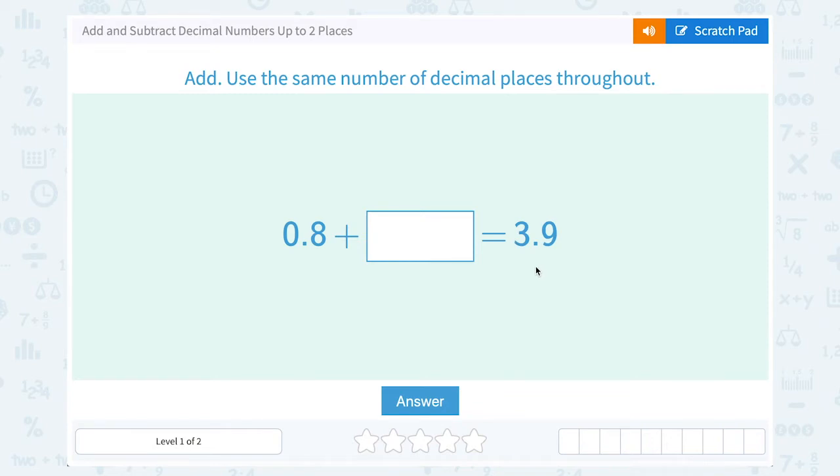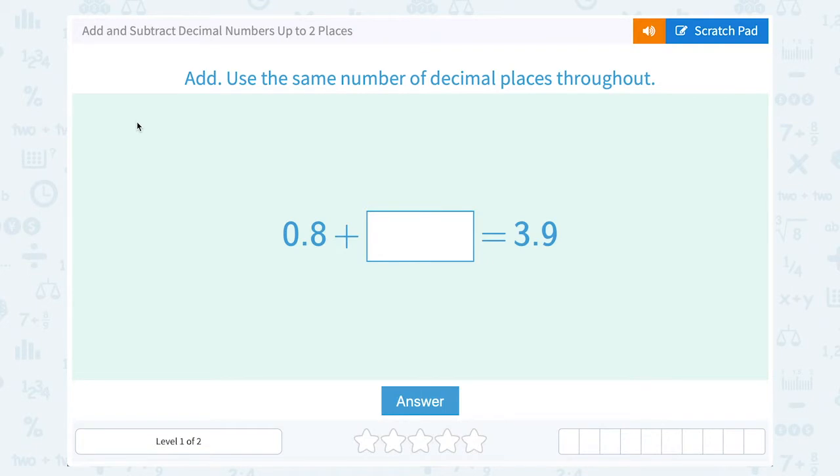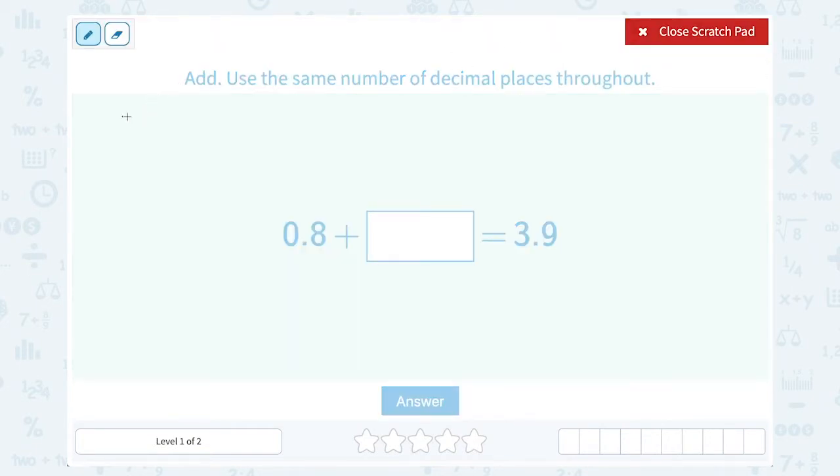To figure out what the missing number is, we can work backwards. If we know the two together add up to 3.9, we can start with our 3.9 and subtract the first number that we know, 0.8, and that should give us an answer of what the second number must have been.